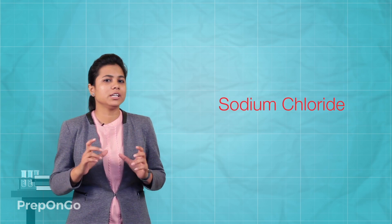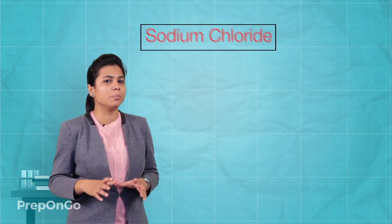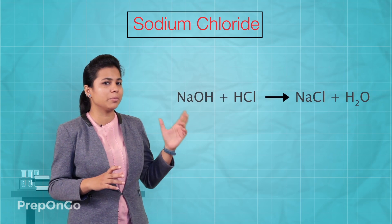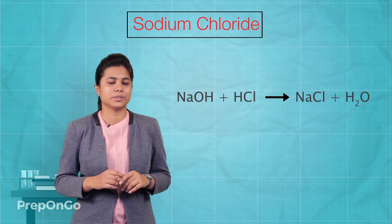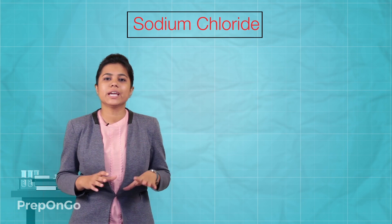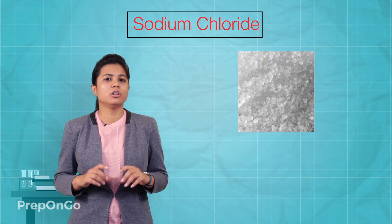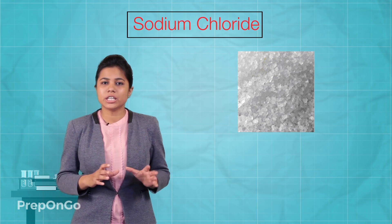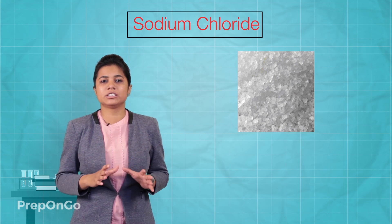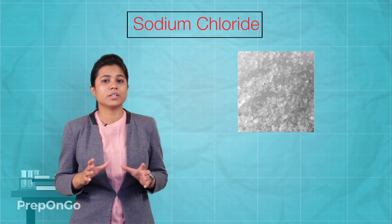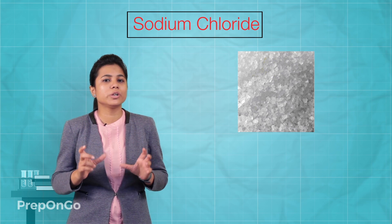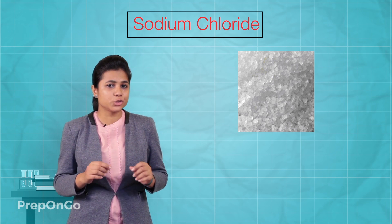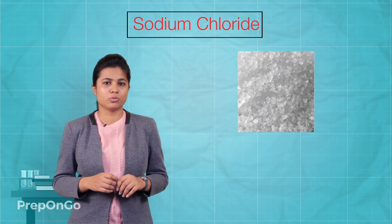Let's see sodium chloride in a bit more detail. Sodium chloride is formed by the combination of sodium hydroxide and hydrochloric acid. We get common salt from sea water, which also has deposits of other salts, so sodium chloride needs to be separated out from it.